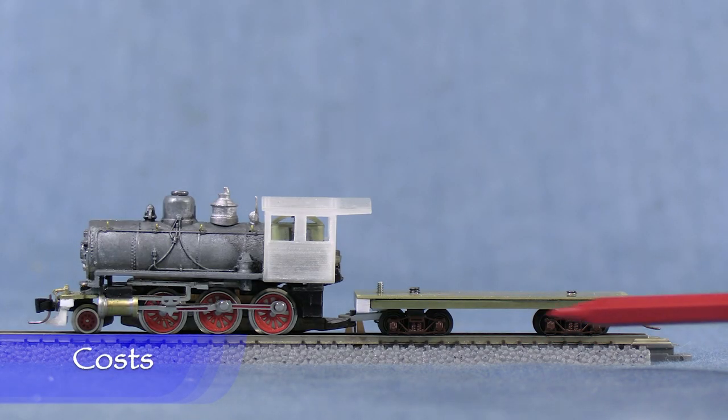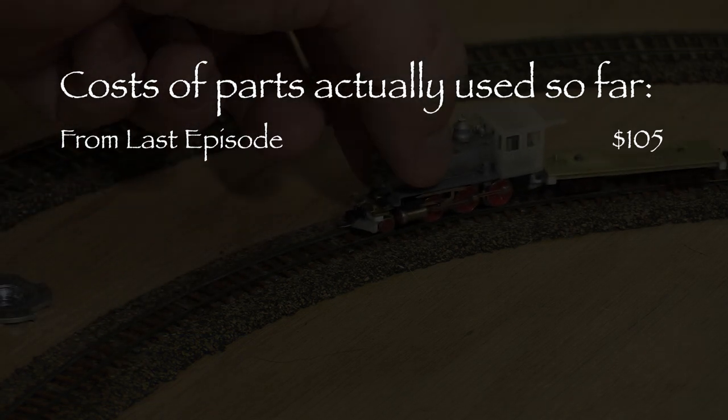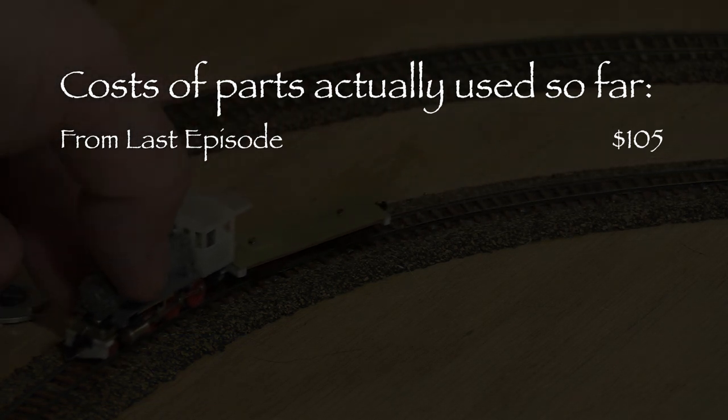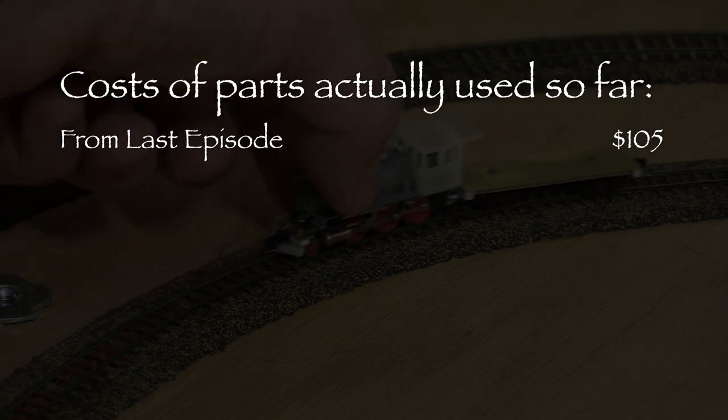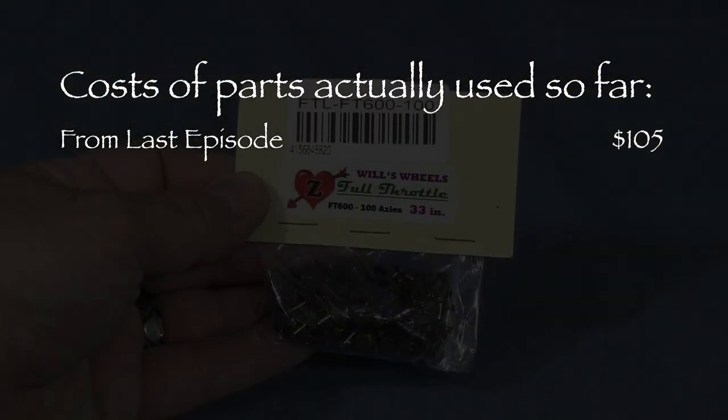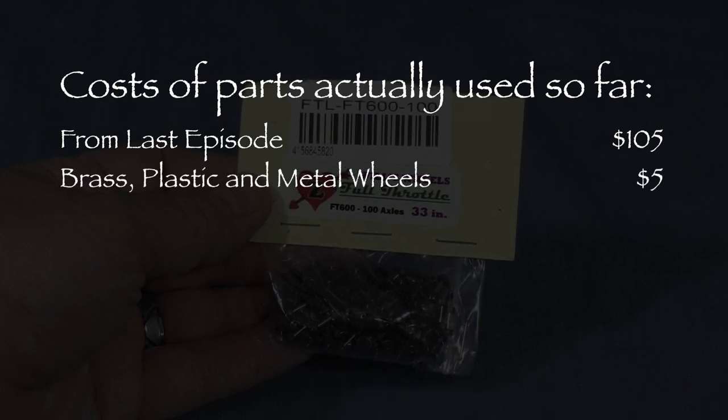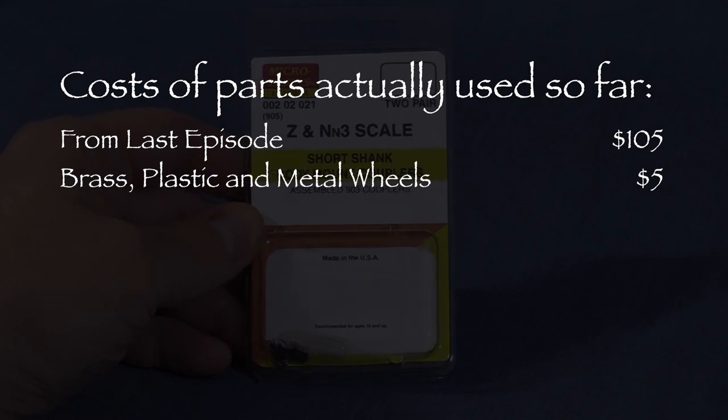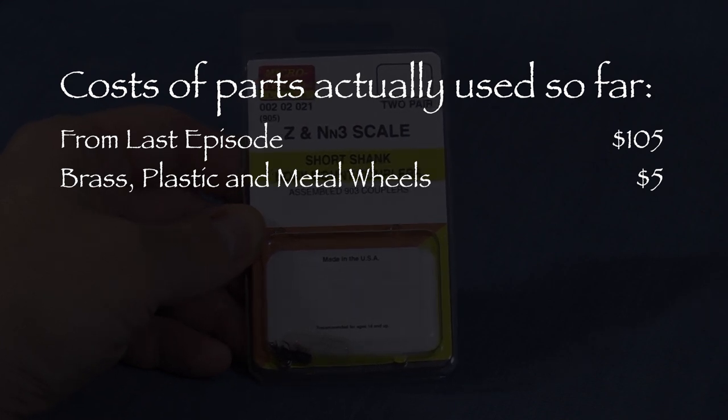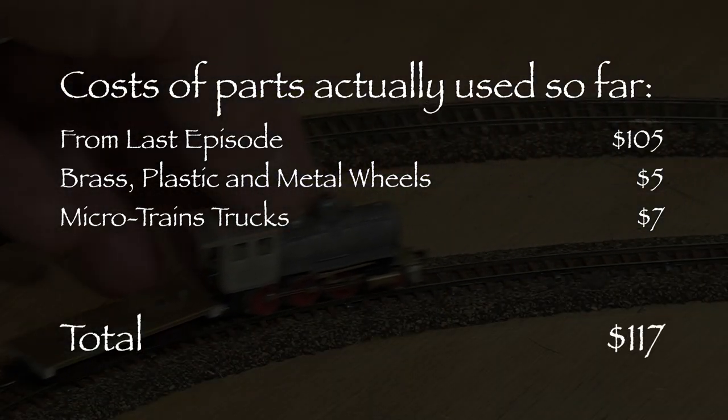For this project, I've been keeping a tally of how much I've been spending. The total from the last episode was $105. Like last time, many of the parts for this build were made from materials I already had on hand, and I only used small amounts of those. I'm going to give a very rough estimate of $5 to cover the brass and plastic used this time, as well as the metal wheels. The Microtrains trucks I used are currently $6.40 on the Microtrains website. I'll round that up to $7. That brings the current total to $117.